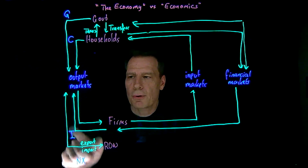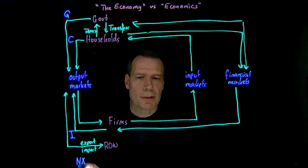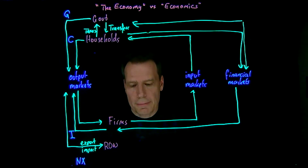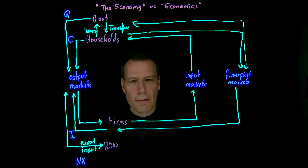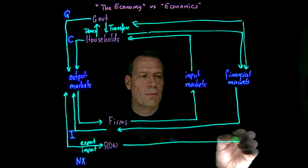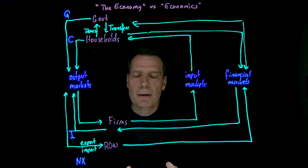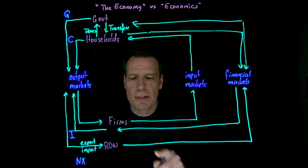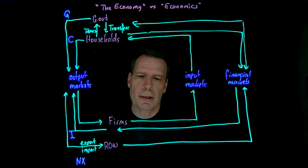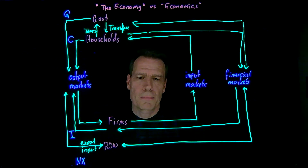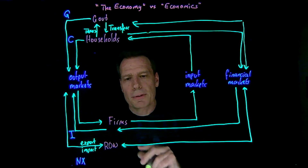The net flow of money depends on whether net exports is positive or negative. The rest of the world also interacts with our financial markets — they might lend money or buy U.S. assets like stocks and bonds, causing money to flow into our financial markets. Or they might borrow money from our financial markets or sell assets, causing money to flow in the opposite direction.